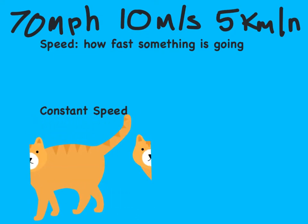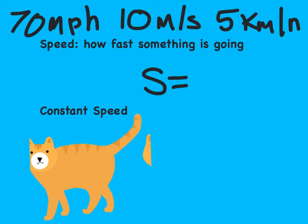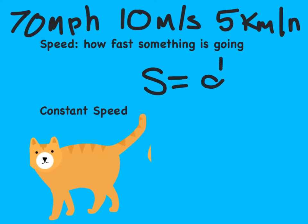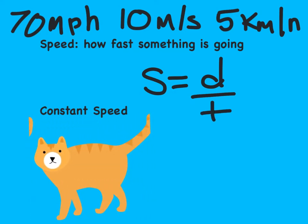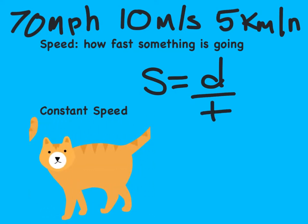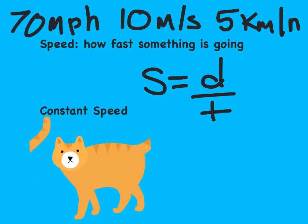There is also a formula that we use in order to calculate the average speed of an object. Speed is equal to the object's distance traveled divided by the amount of time that it took the object to move that distance. This is abbreviated in the formula as S equals D divided by T.